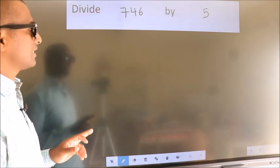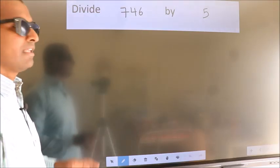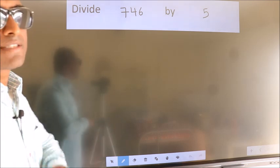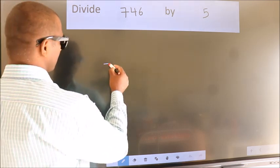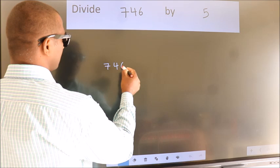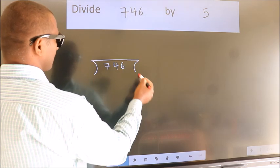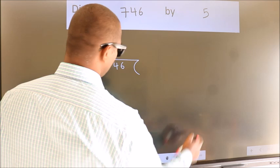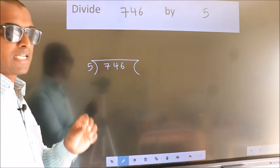Divide 746 by 5. To do this division, we should frame it in this way. 746 here, 5 here. This is your step 1.